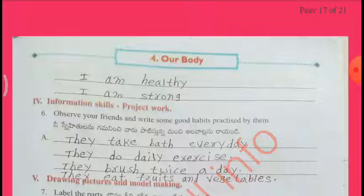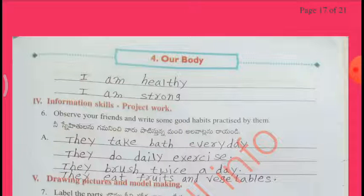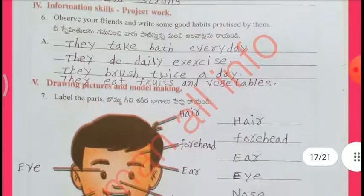Information skills — Project work: Observe your friends and write some good habits practiced by them. They take bath every day. They do daily exercise. They brush twice a day. They eat fruits and vegetables.